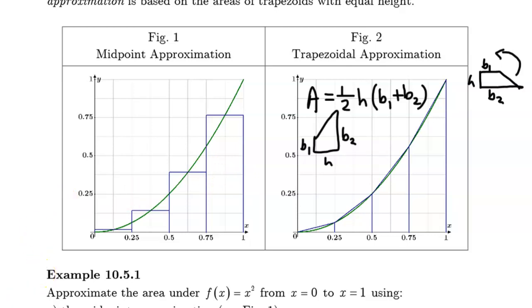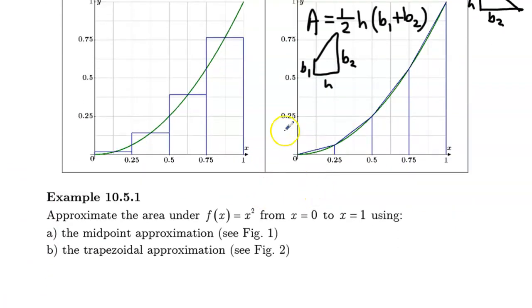So let's proceed then and figure out the area. Again, just like in our previous example, we just have to figure out the areas of the four trapezoids.